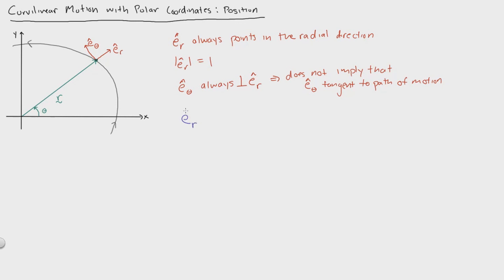To formally define that, we can say that the unit vector er cross with e theta will be pointing in the positive k direction — the positive z direction of this Cartesian coordinate system. In this diagram, that would be the vector pointing directly at you.